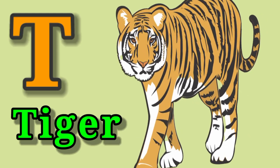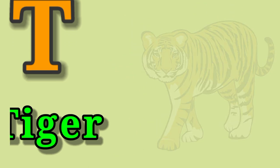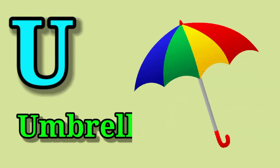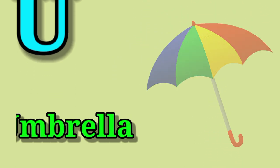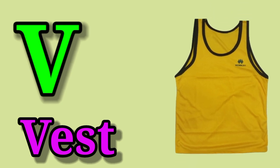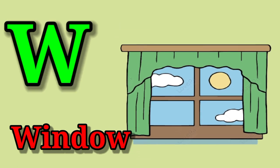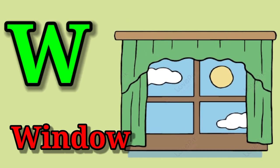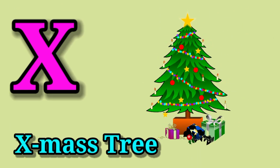T. T for tiger. U. U for umbrella. V. V for vest. W. W for window. X. X for xylophone.